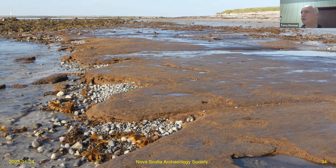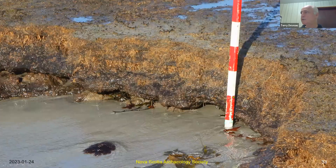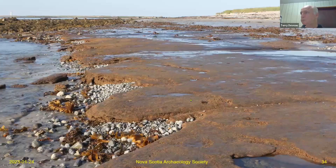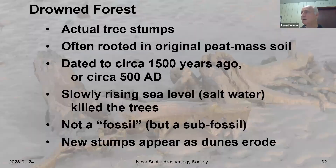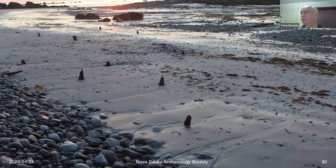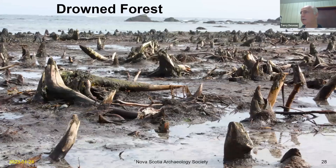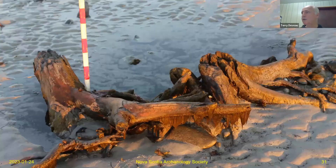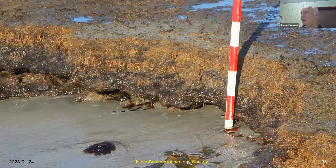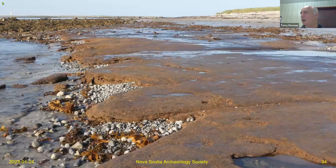The soil lies on top of a cobbled beach — it's only about a foot thick, though I'm sure it varies. This meter stick is marked off in 10-centimeter segments, so three segments is approximately one foot. This shows a particularly clean area of peat where there aren't very many tree roots or stumps, which contrasts with other areas that are very densely populated with stumps.